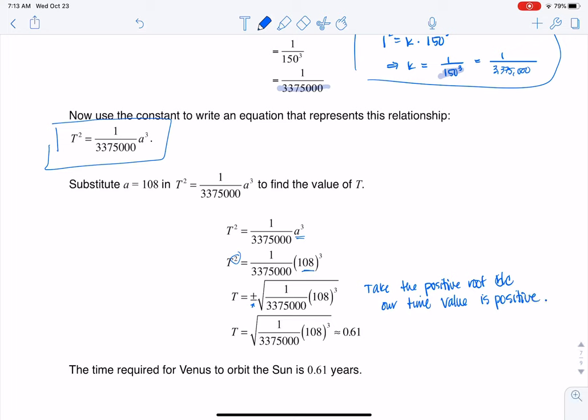And then when we crunch that number on our calculator, we arrive at about 0.61. So that's how long it takes Venus to orbit the sun, about 0.61 years. So what takes us a whole year, Venus will get done in about six tenths of a year. So a little bit less than eight months. All right. Thanks so much, everyone. Bye.